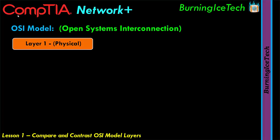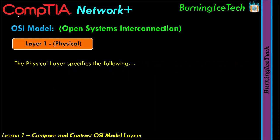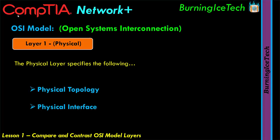The physical layer is responsible for the actual transmission and reception of signals representing bits of data from one node to another, and this can be done via either cable or wireless. The physical layer also specifies the physical network topology and the physical interface — topics that will be covered in much more depth later in the course.